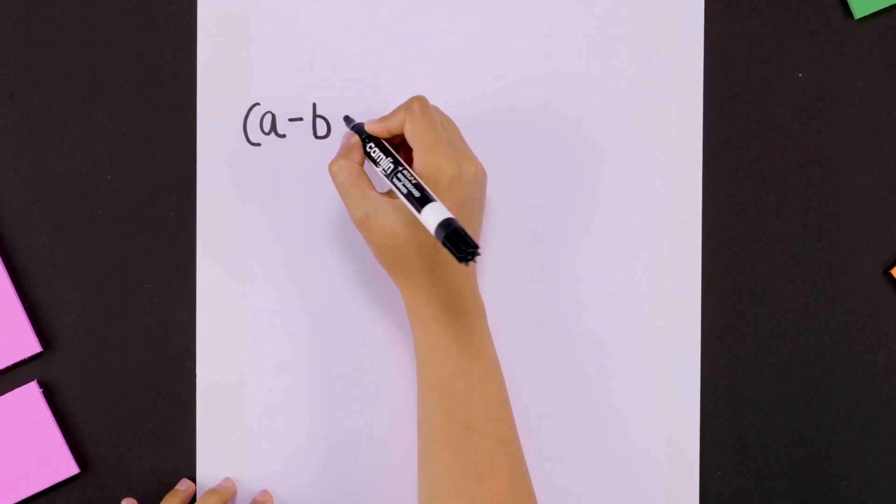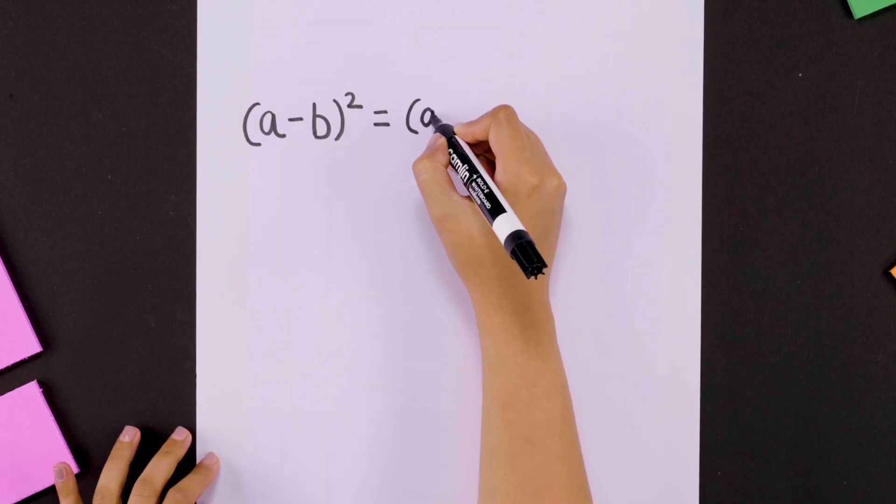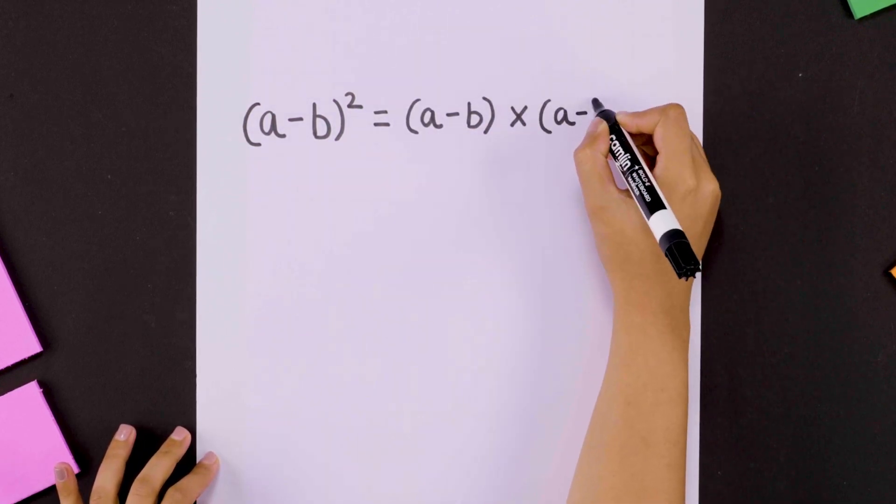There's another way to look at it. a-b whole squared is actually a-b times a-b. To find the product of these brackets, we'll use the distributive property.